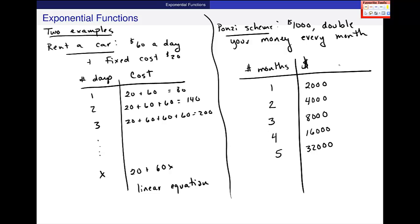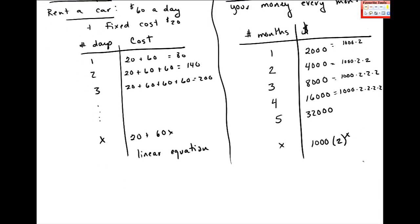So this is a number where this was 1,000 times 2, and this was 1,000 times 2 times 2. Here's 1,000 times 2 times 2 times 2. Do you see where I'm going with this? When I write this general equation for number of months where x is the number of months, I get 1,000 times 2 to the x power, because repeated multiplication is this exponent. And this is what I mean by an exponential equation.